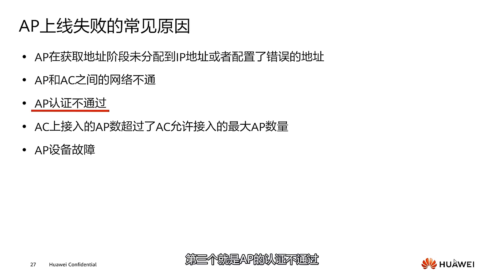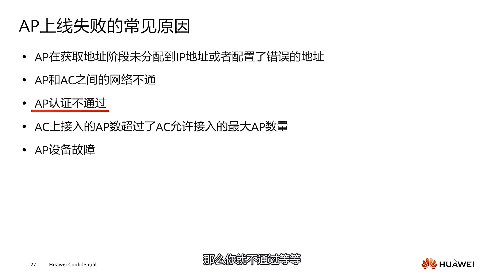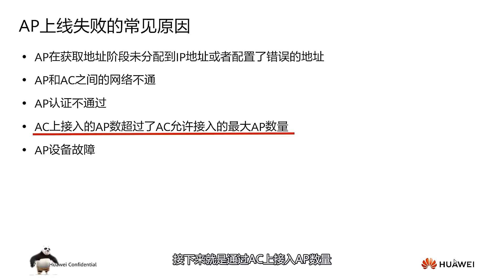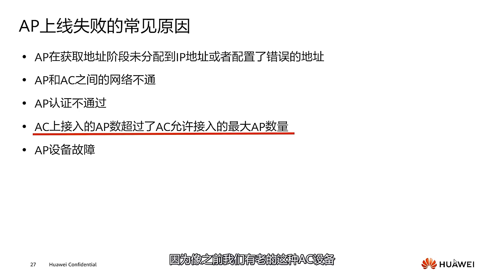The third issue is AP authentication failure. This usually occurs because the AP is added to the AC using its MAC address, and a mistyped MAC address will cause authentication to fail. Additionally, the number of APs connected to the AC may exceed the maximum number of APs allowed — this is a common issue to be aware of.